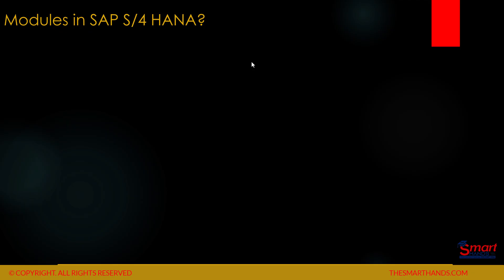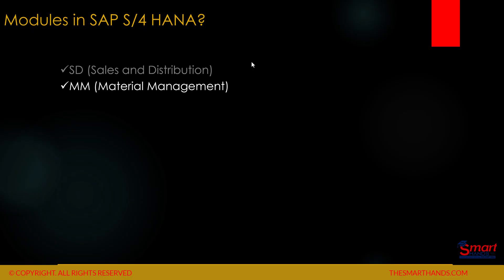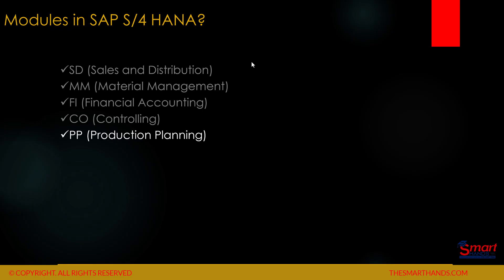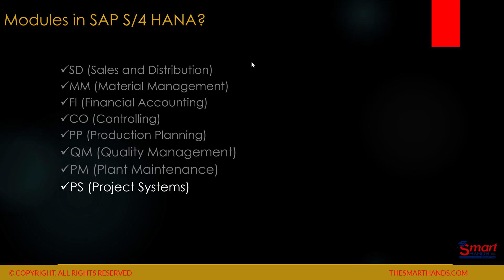Now we'll learn about the different modules in SAP S4 HANA. You can categorize the modules into two categories: technical and functional. Technical modules require an IT background — for example, ABAP which is the programming side, BASIS which is the maintenance side, and newer modules like BTP. The functional modules include SD (Sales and Distribution), Material Management, Financial Accounting, Controlling, Production Planning, Quality Management, Plant Maintenance, Project Systems, Transportation Management, and many others. In this course we are only learning about MM.